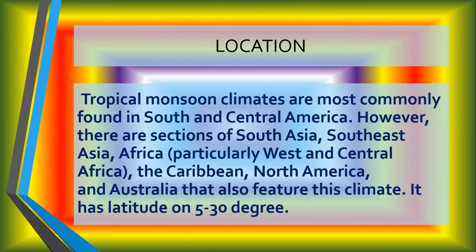Tropical monsoon climate can be found in 5 degrees to 30 degrees north and south latitude from the equator. It is mainly found in South and Central America. However, there are sections of South Asia, Southeast Asia, Africa — particularly West and Central Africa — the Caribbean, and Australia that also experience this type of climate.